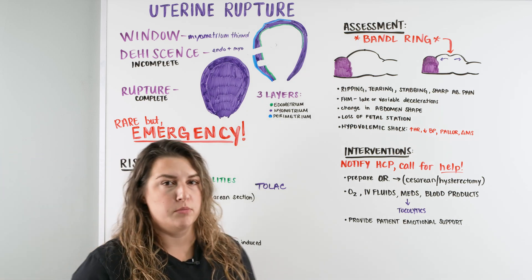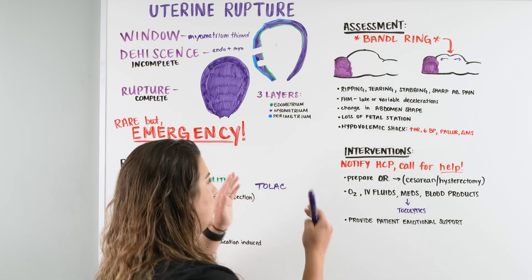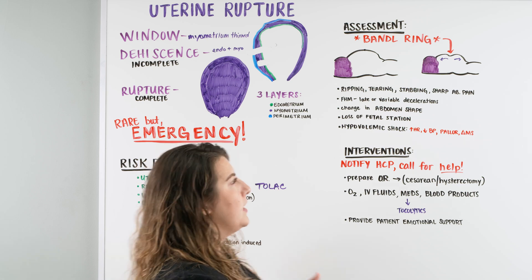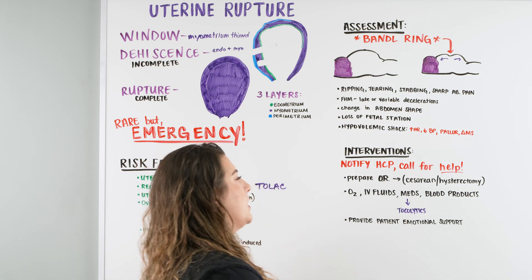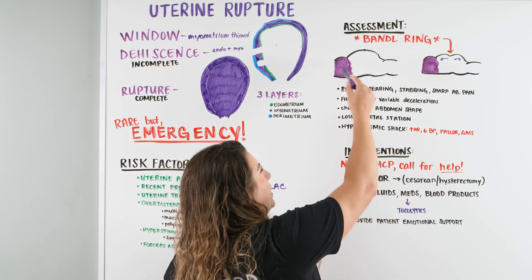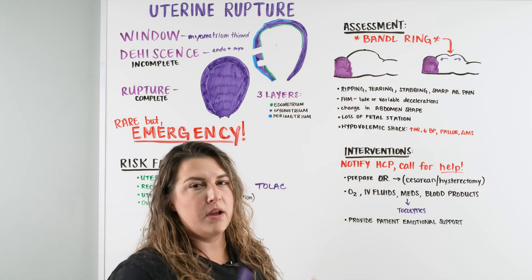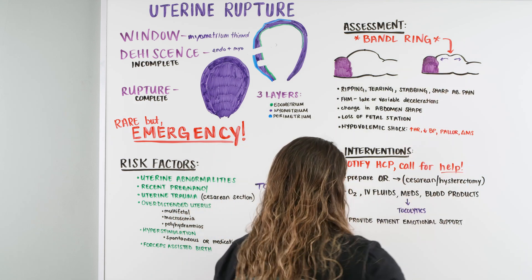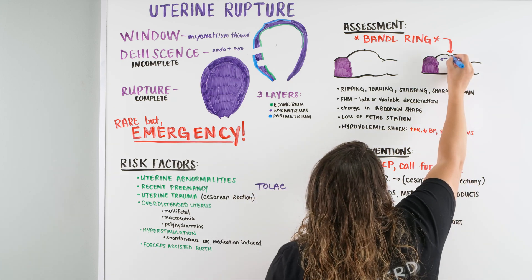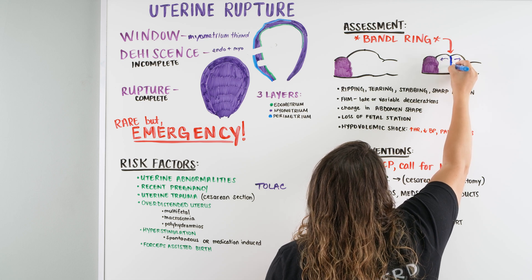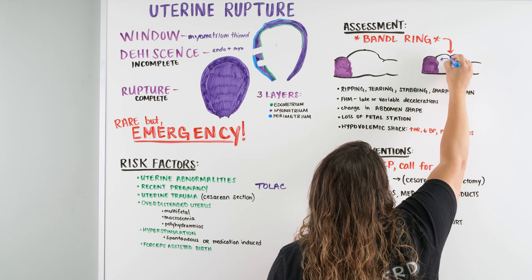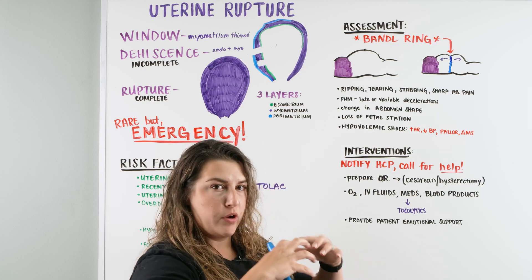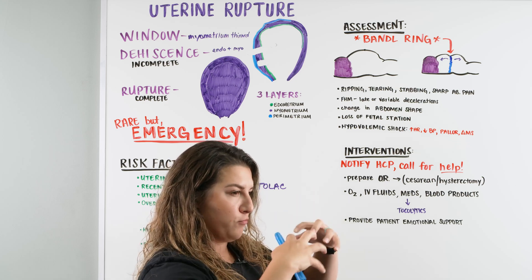Let's talk about assessments when looking at patients for a potential window, dehiscence, or rupture. There's a big sign called the Bandl ring. When we're looking at mom — she's laying on her back or side — normally the pregnant belly looks nice, big, and round. But there may be a sign early on during a contraction where we see a ring — a divot occurring within the belly, like a constriction or inner tube around the belly pooling in that area. That's called the Bandl ring, indicating pressure or pooling causing a ripple effect around the body.